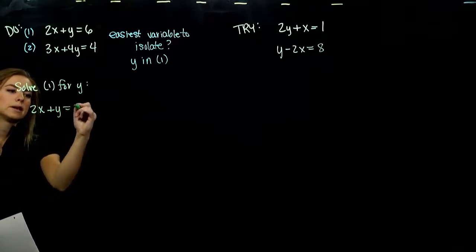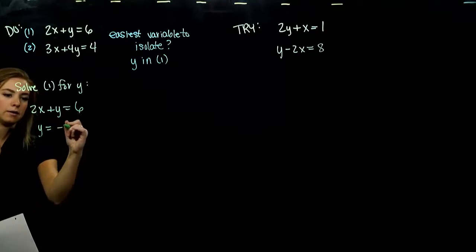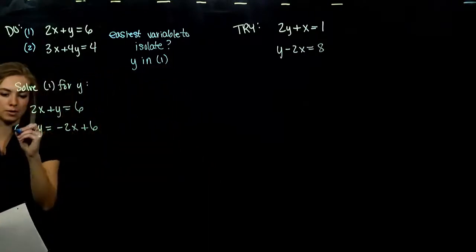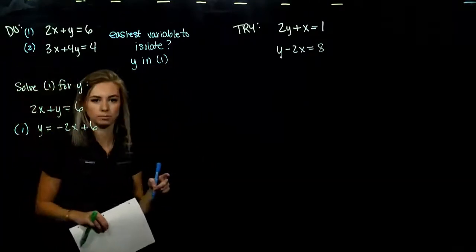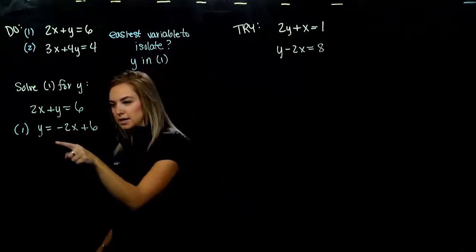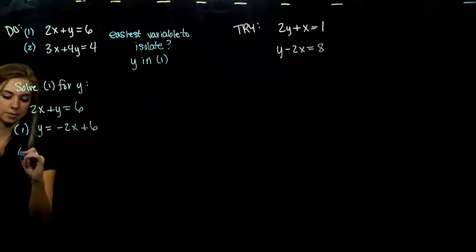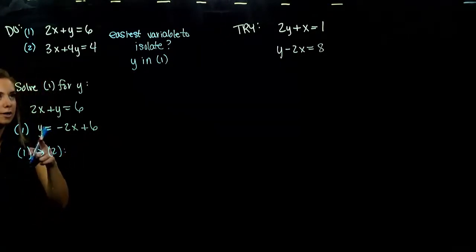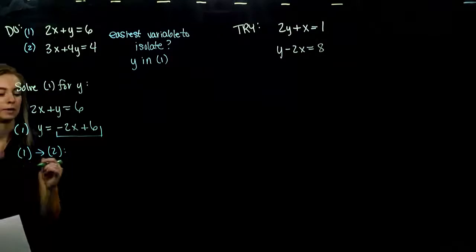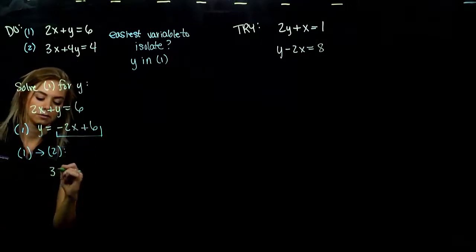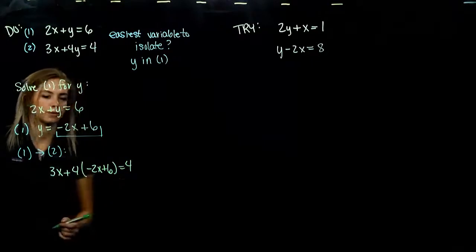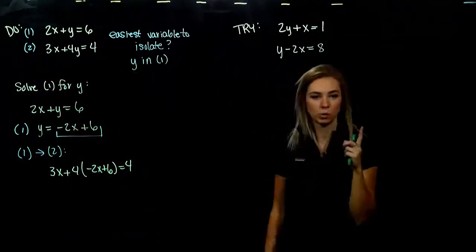When we take equation 1 and solve it for y: to get y on its own, we subtract 2x from both sides. We still have an equivalent system — it's just equation 1 in a different form. Now we have this rearranged equation with y isolated. We're going to substitute this new form into our second equation, replacing every y with the expression we found.